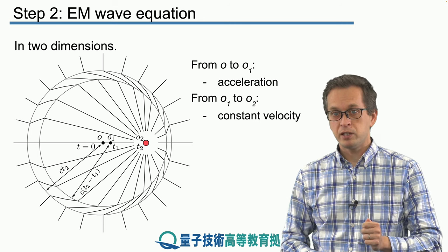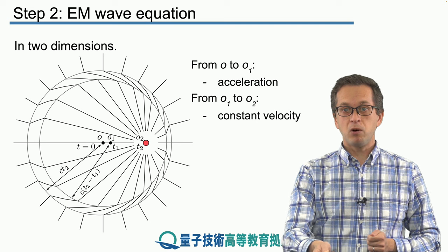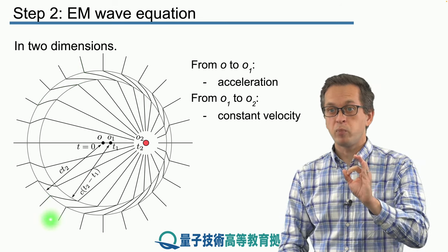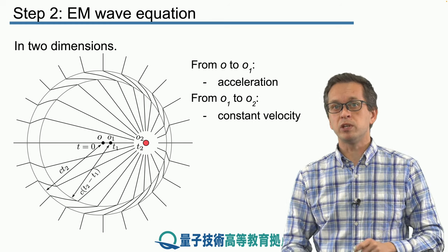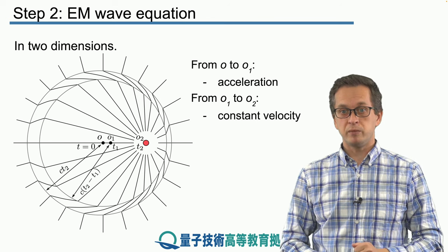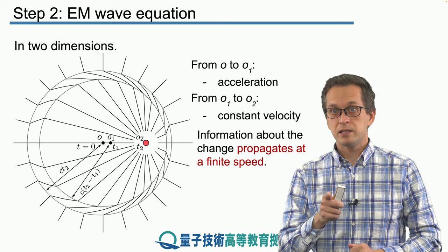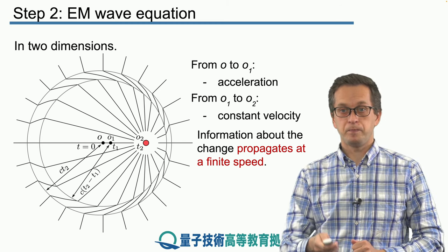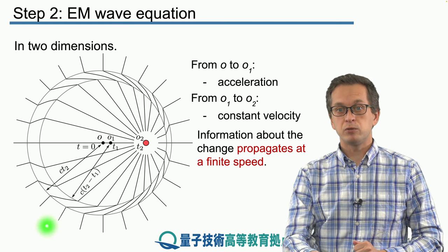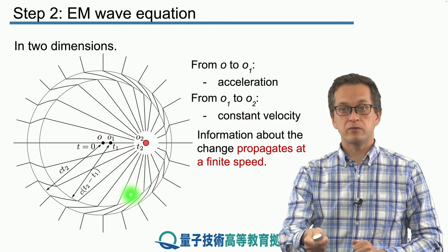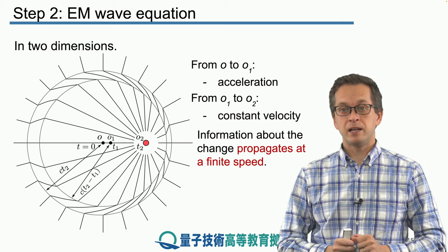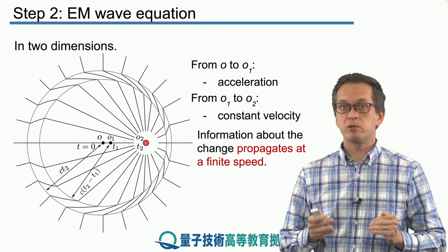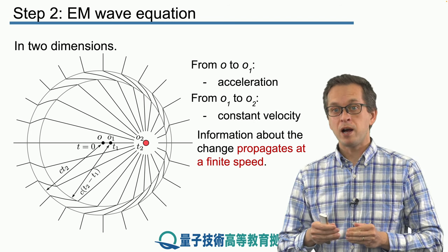Because the charge was accelerating, it creates a kink in the field lines. All the electric field lines outside this circle are the original lines from when the charge was at 0,0 at the center — they don't yet know the charge accelerated because the information hasn't reached them. This outer distance is c times t2, while the inner boundary where we stopped accelerating is c times t2 minus t1. Because the field lines must join continuously, there is a kink in the electric field, and it is this kink that is the electromagnetic wave.